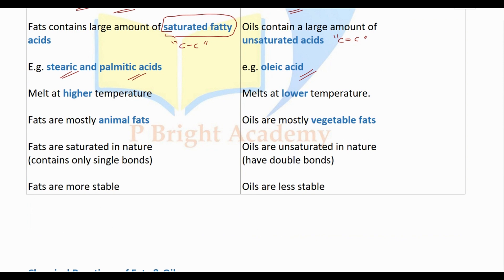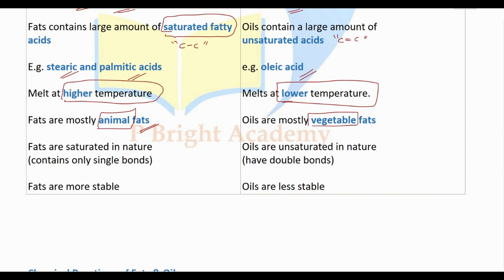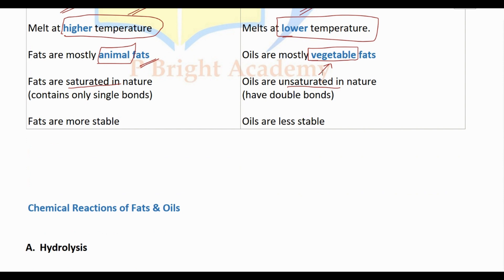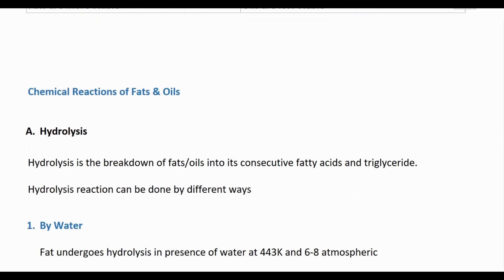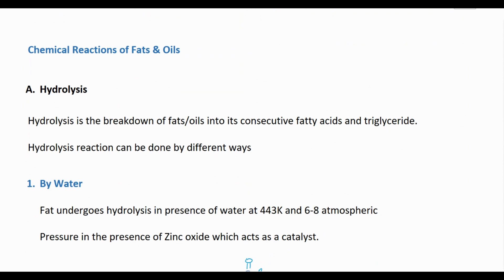Fats require a higher temperature to melt. Fats are mostly animal-derived; oils are mostly vegetable-derived. Compared to stability, oils will be less stable than fats.